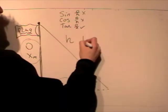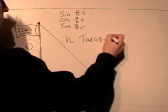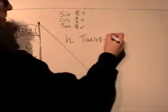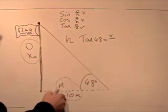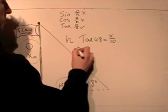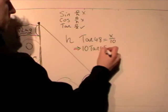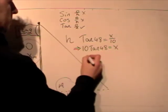We know that it's tan, and the angle 48 is equal to o, the opposite which is x we don't know, over a, 10 meters. Remember when we have a number on the bottom, we bring it over to the left hand side and multiply it, so that is 10 times tan 48 is equal to x.